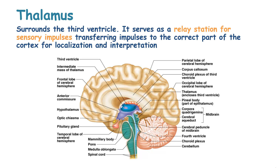The thalamus surrounds the third ventricle and serves as a relay station for sensory impulses, transferring impulses to the correct part of the brain cortex for localization and interpretation.